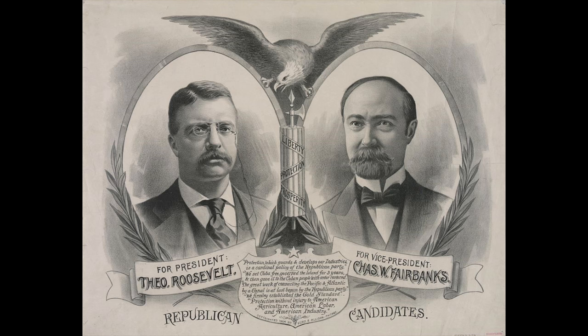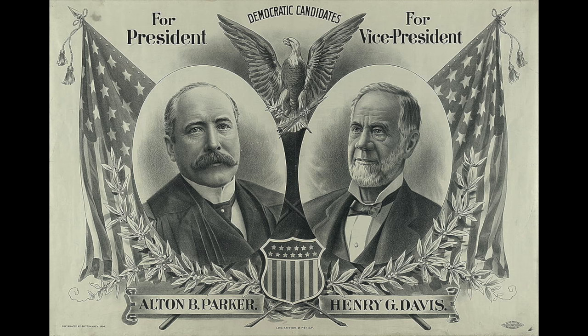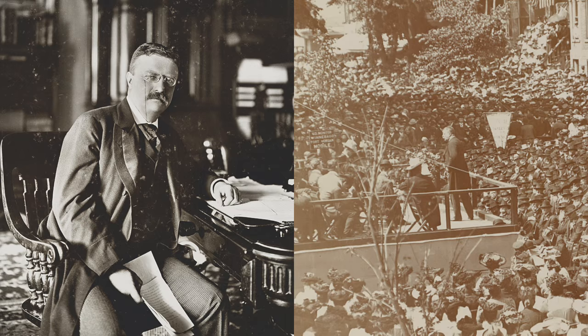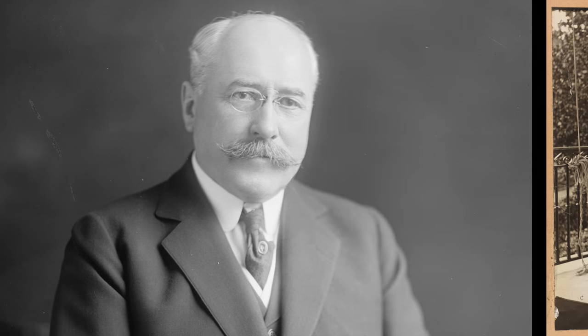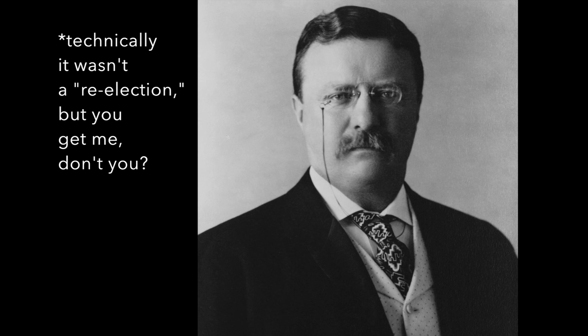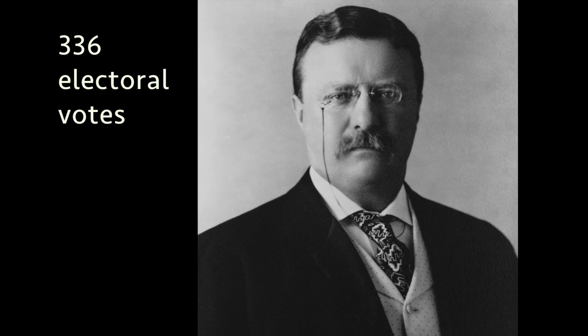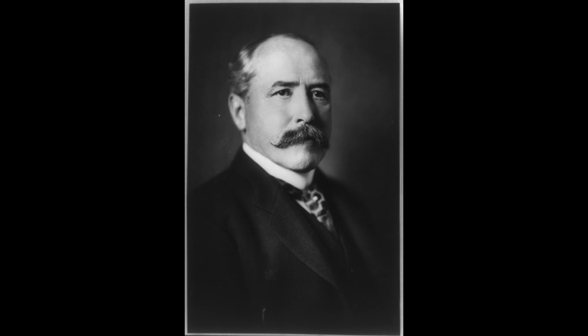The campaigning in 1904 was fairly low-key. Maybe it was because most everyone knew Alton Parker didn't stand a chance against the popular Roosevelt. While Roosevelt was charismatic and energetic, Parker was boring and didn't even get Democrats excited. Plus, Parker and Roosevelt agreed on most issues, so this election became more about the difference between their personalities. And here are the results: Theodore Roosevelt easily won re-election. In fact, it was a landslide. Roosevelt received 336 electoral votes, and Alton Parker only received 140 electoral votes.